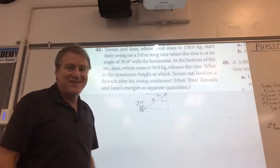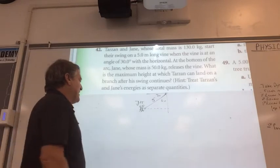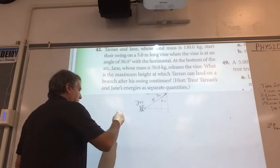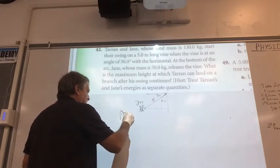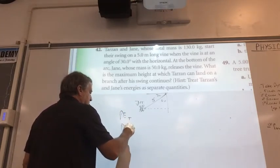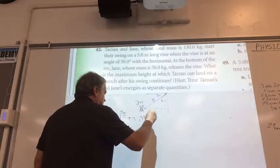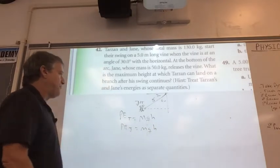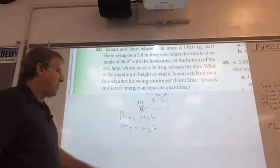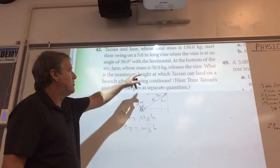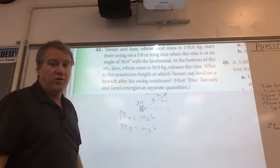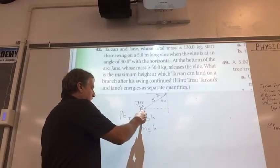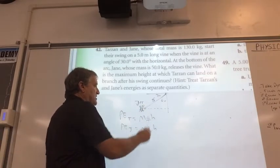We need to figure out their potential energies because that's all they're starting with. We're going to do the potential energy of Tarzan and the potential energy of Jane. That's just MGH of Tarzan and MGH of Jane. All I need to know is their heights. Jane is 50 kilograms. If their total is 130, then Tarzan's 80. That's pretty easy to calculate: 80 and 50, times 9.8, 9.8.